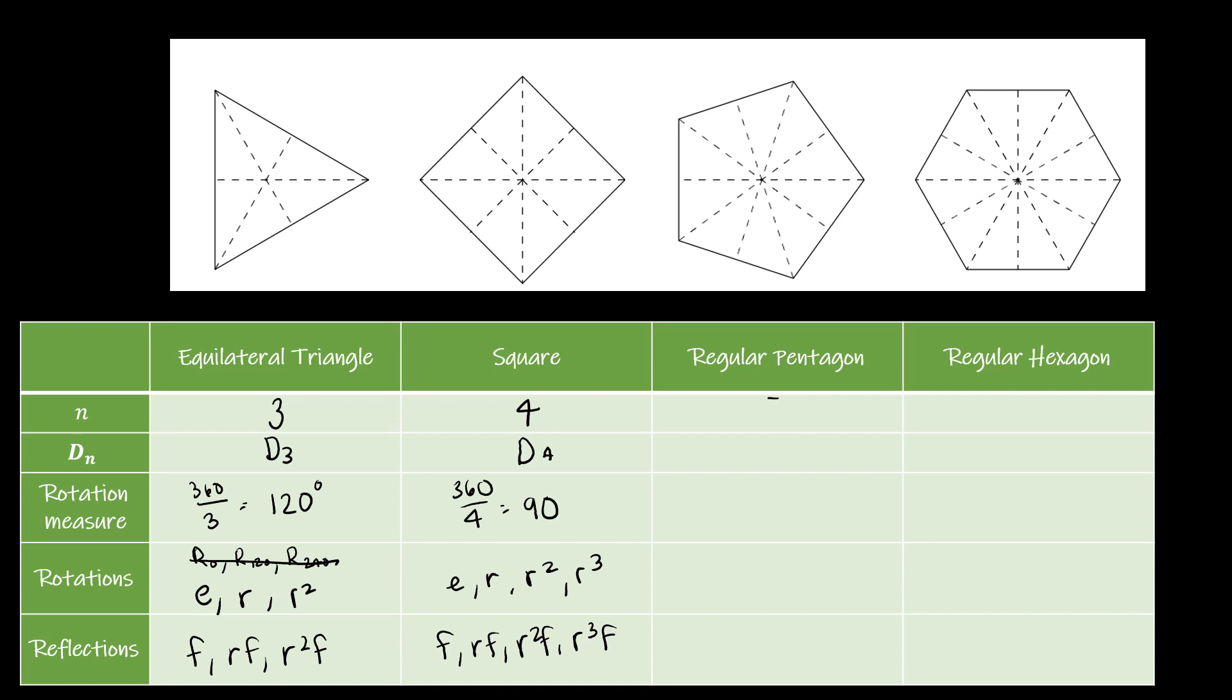Pentagon, five sides, D5. Rotation measure, 360 divided by five, which is 72. Rotations: E, R, R squared, R cubed, R to the fourth. And then F, RF, R squared F, R cubed F, R to the fourth F.